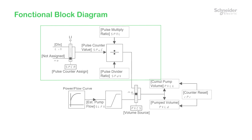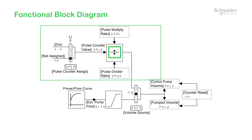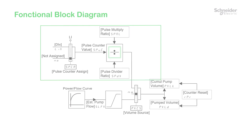The pulse counter value is converted into volume with a resolution of 0.1 liter per pulse using the two ratio parameters: Pulse Multiply Ratio and Pulse Divider Ratio.